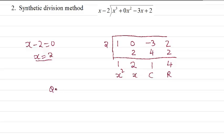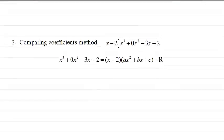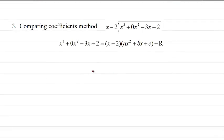So quotient is equal to x squared plus 2x plus 1. The remainder is equal to 4. Now we can use the third method, comparing the coefficients.